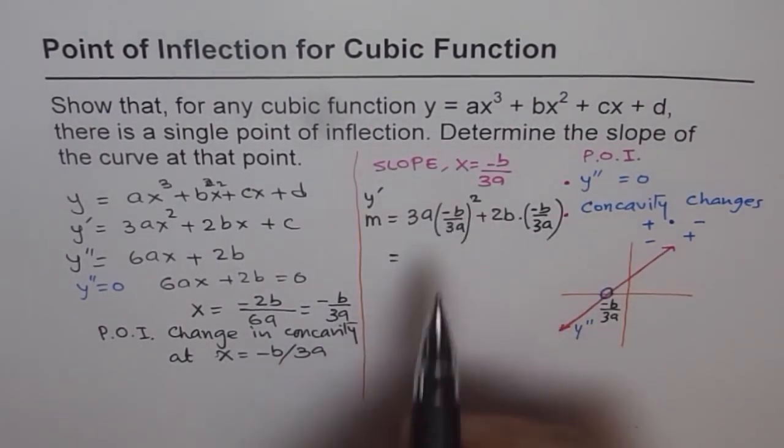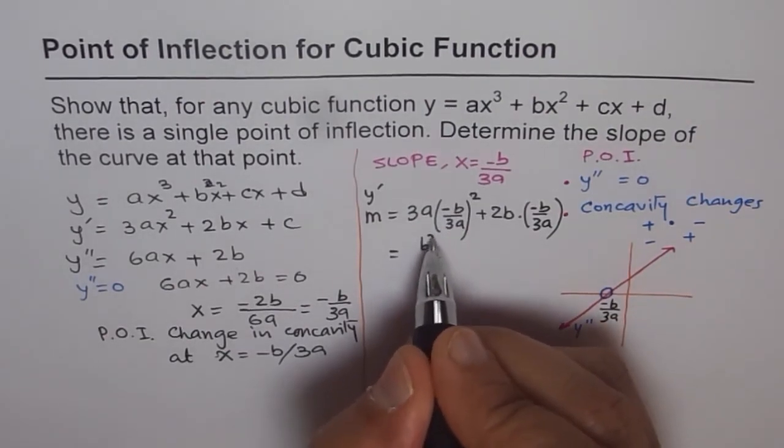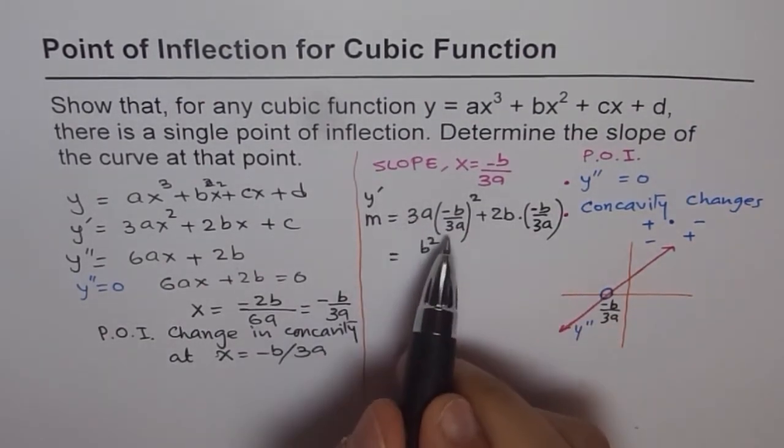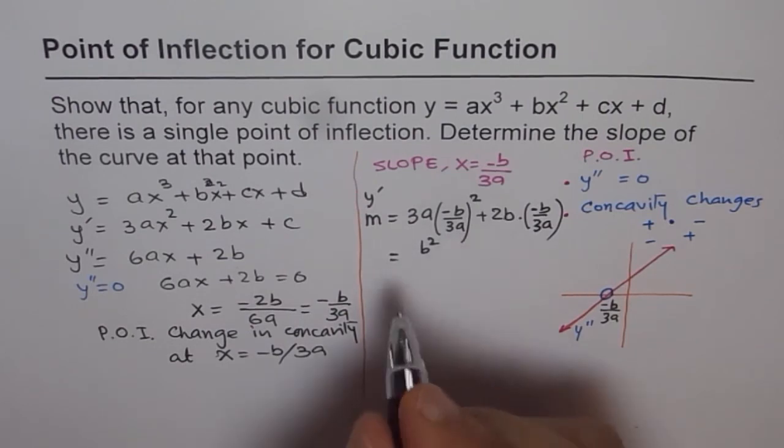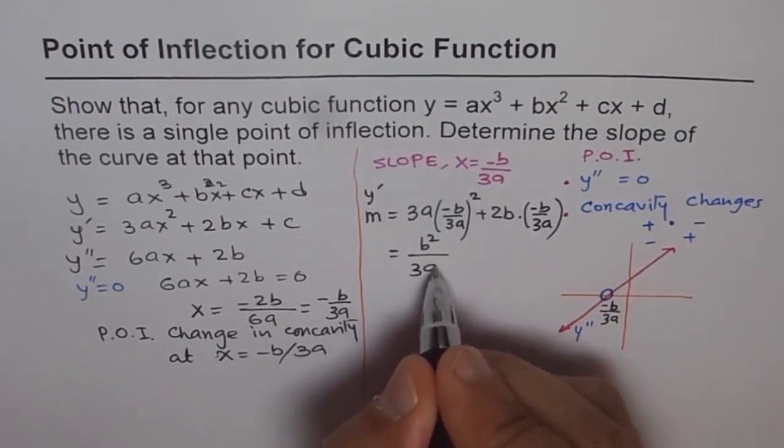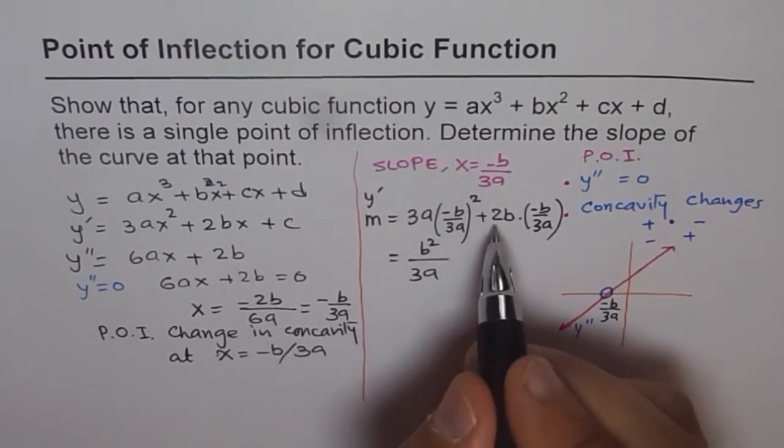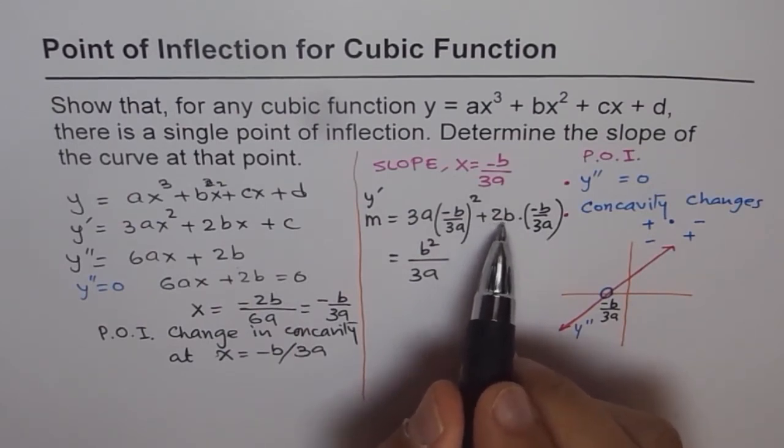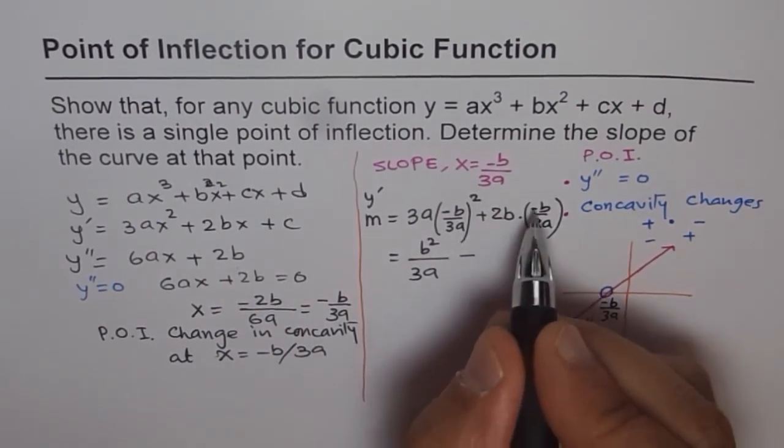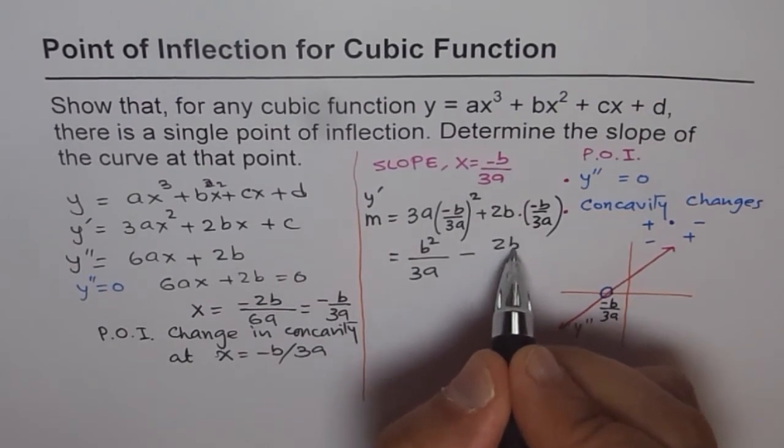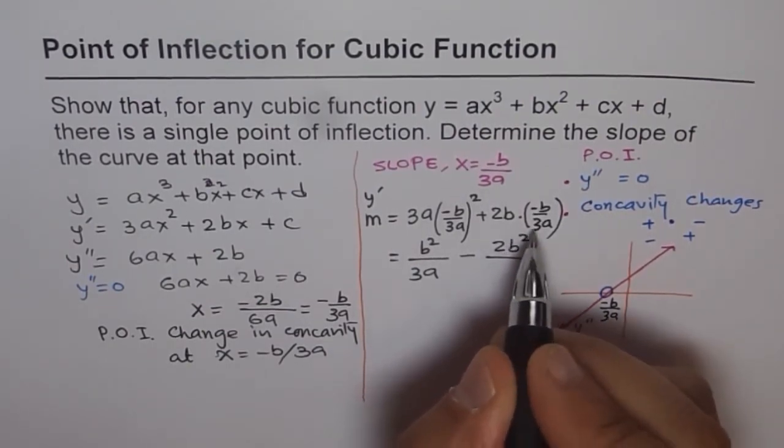We can simplify this. This square, if you do, minus b will become plus b². That comes in the numerator. And 3a in the numerator becomes 3a². So we will get 3a in the numerator. And here, we will have minus sign, because this is minus 2b² over 3a.